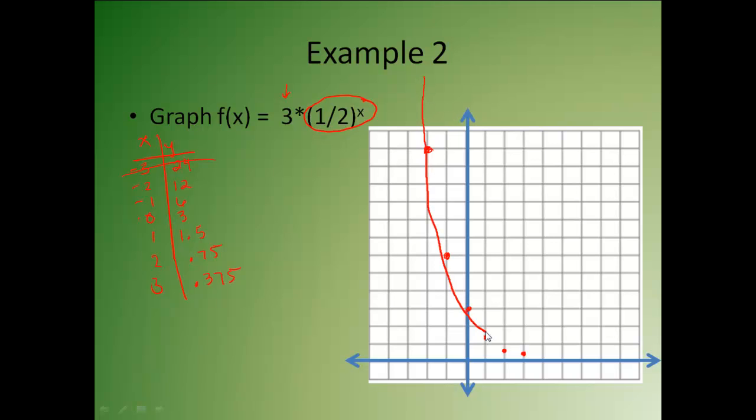Notice again, it's starting to level out down here at the bottom. And that's because I'm going to be approaching that asymptote of y equals 0 for my horizontal asymptote.